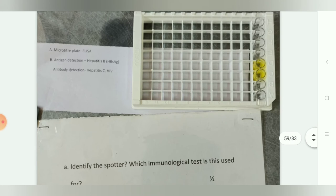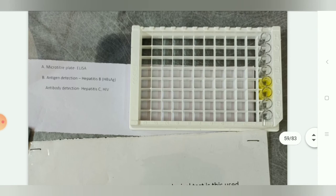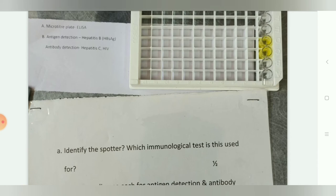The next spotter: identify the spotter and which immunological test is it used for. It is a microtiter plate used for ELISA. The display test here is ELISA.